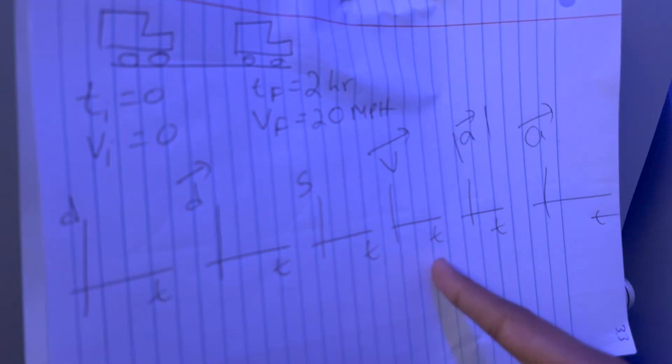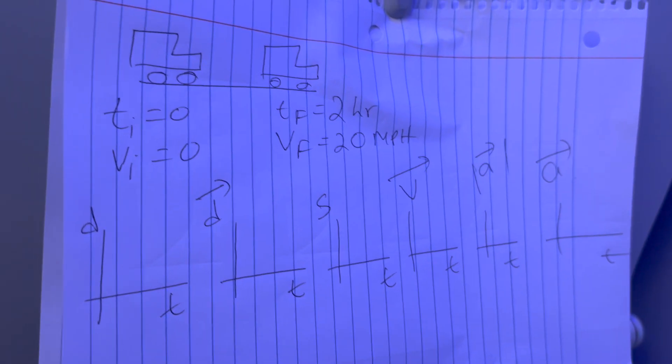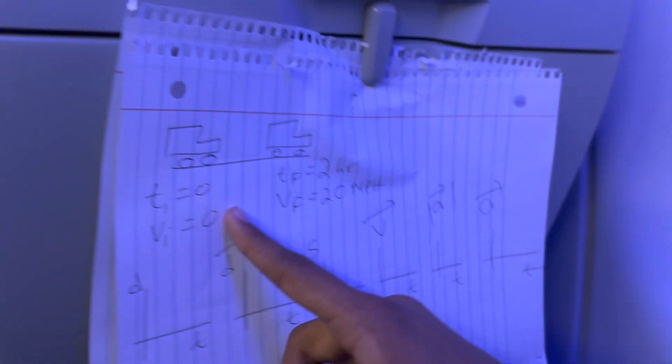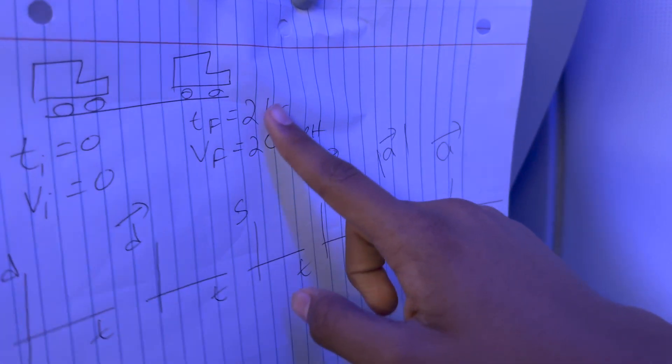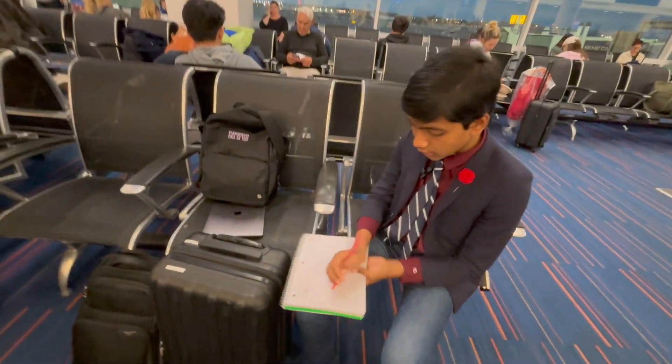We'll be solving for distance, displacement, speed, velocity, the magnitude of acceleration, and acceleration over time for this scenario where the initial time is zero, the initial velocity is zero, the final time is two hours, the final velocity is 20 mph. You have to write six equations of distance over time.